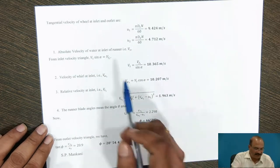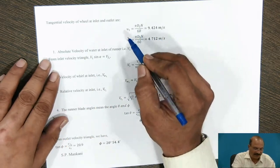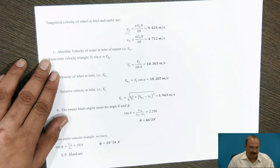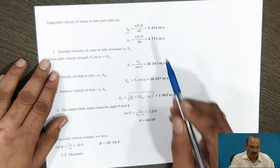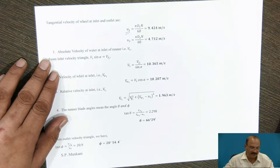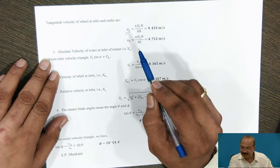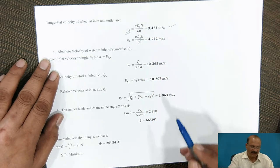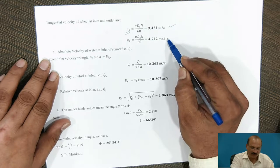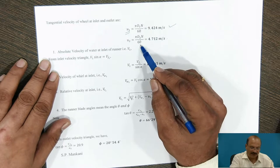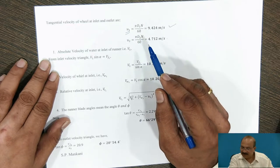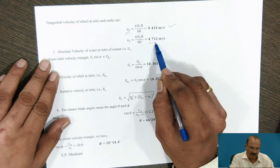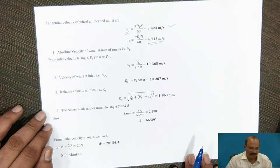We calculate the tangential velocity U1 at inlet: U1 = π D1 N / 60. With D1 = 0.9 m and N = 200 rpm, U1 = 9.424 m/s. Similarly, the outlet tangential velocity U2 = π D2 N / 60. With D2 = 0.45 m and N = 200, U2 = 4.712 m/s.